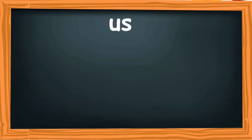Which word can you see here? The word is 'us.' Children, please repeat after me — the word is 'us.' What is the meaning of the word 'us'? The word 'us' is used to refer to himself or herself along with other people. It means ourselves as well. Now, let us use the word 'us' in a sentence.